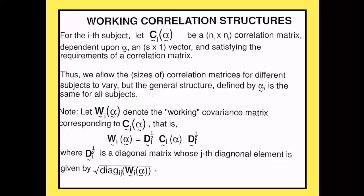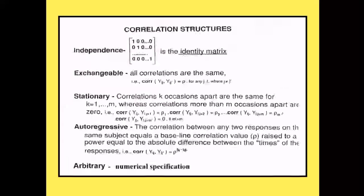Arbitrary correlation structures are sometimes used as a compromise when you're not sure what to use, or when you have a more complicated structure — for example, in a bypass study where the correlation has both a longitudinal component across time and a cross-sectional component. You might run several different correlation structures, examine the estimated correlations, and use them to construct an arbitrary structure as a compromise. These are the different correlation structures available in GEE.